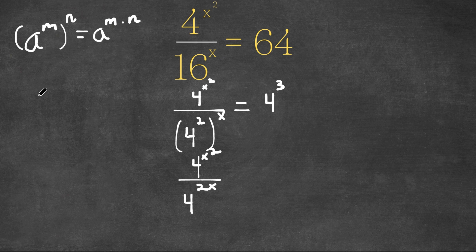Now, if we have something in the form a to the power of m over a to the power of n, this is the same thing as a to the power of m minus n.